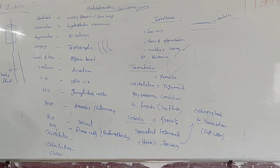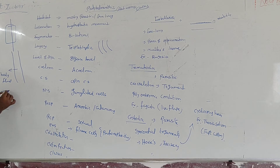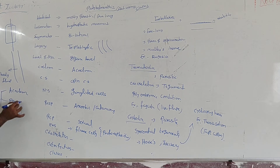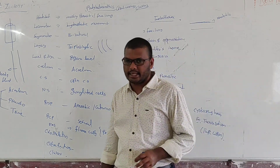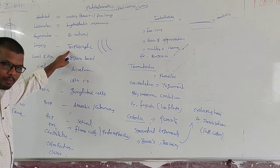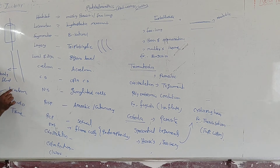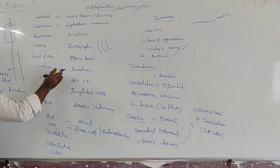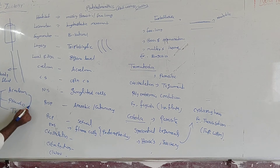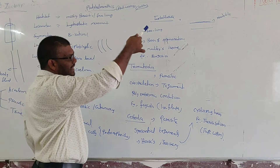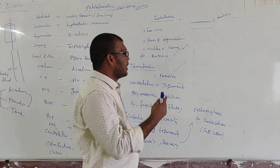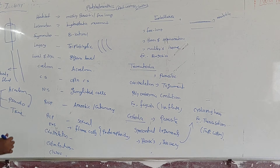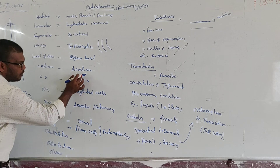Now if we go for the coelom, there are three types: acoelomate, pseudocoelomate, and true coelomate. We discuss the coelom only at the triploblastic level. In Platyhelminthes, the coelom is acoelomate — meaning there is no body cavity. After Platyhelminthes, the next phylum Nematoda shows pseudocoelom. After Nematoda, Annelida shows true coelom.